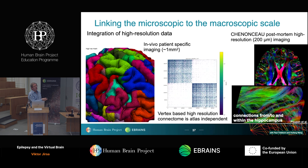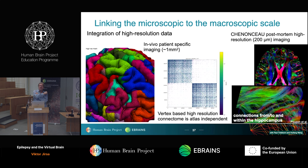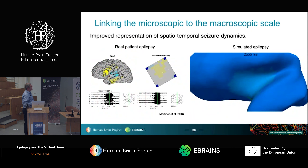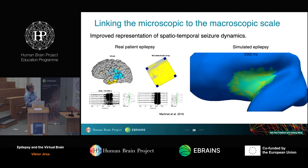We connect it to work from CEA — Cyril Poupon and colleagues — the Chenonceau project, where they have reconstructed an ex vivo brain with very high resolution: high-field MRI getting up to 200 micrometer resolution, reconstructing individual tracks. We map this — this becomes our template for fitting, in which we then bias with the individual connectome. Once co-registered, we can do things like this — here is a simulation, and this is real data from Cathy Chavez's lab: multi-scale data, electrocorticogram, activity that propagates.